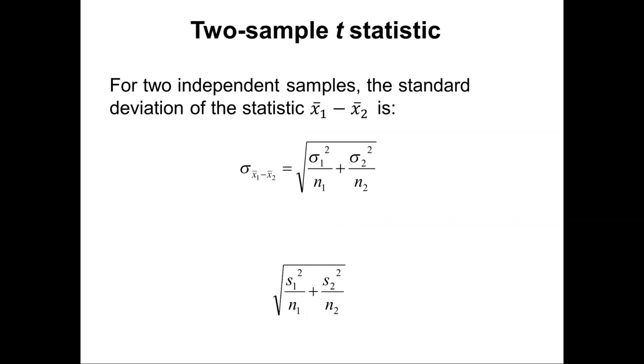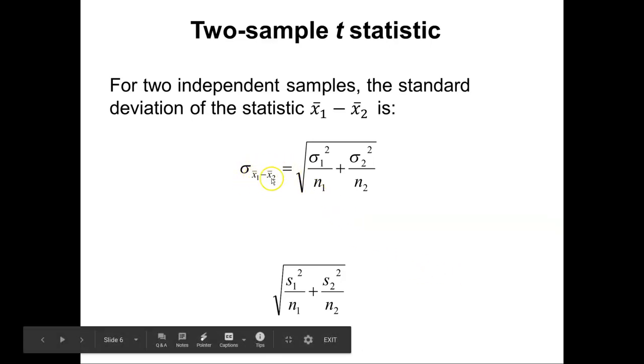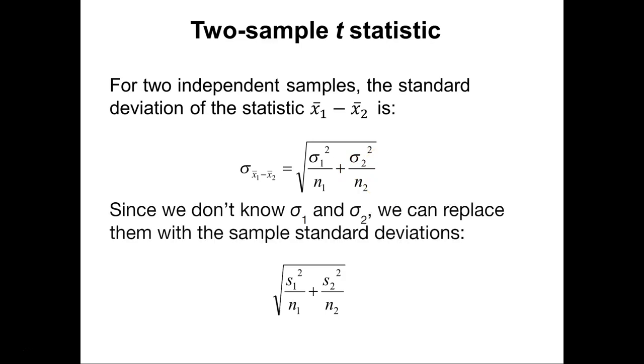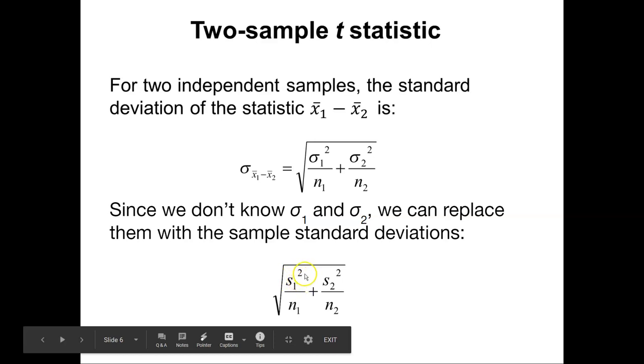Here is the formula for a two sample t statistic. For two independent samples, this is how we calculate the standard deviation. The standard deviation could be considered as the difference between x bar sub 1 and x bar sub 2. To do that, we take each variance and divide it by the number of samples for that population. And then we add to it the second variance divided by the number of observations in that sample, and take the square root. And so when we do that, we don't know what sigma1 and sigma2 are, but we can replace them with the sample standard deviations s1 and s2.